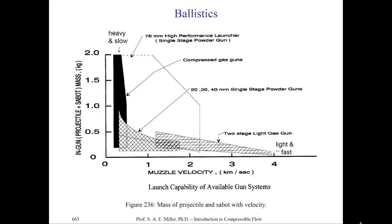These ballistic facilities have different types of guns to launch different masses of projectiles at different velocities. On the x-axis is the muzzle velocity in kilometers per second; on the y-axis is the mass of the projectile. If you want a very high velocity test — greater than four kilometers per second — you need the so-called two-stage light gas gun, pictured in the previous facility. For a very high mass test article, you might use a more traditional powder gun like the 76-millimeter high-performance launcher, similar to a howitzer or other artillery device.